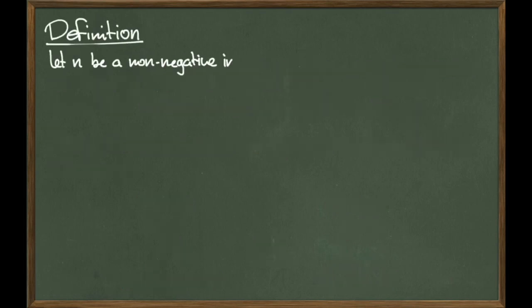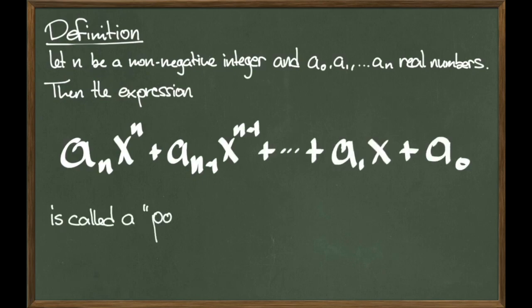Now we're ready to define a polynomial. Let n be a non-negative integer and let a0, a1, up to an be real numbers. Then the expression below is called a polynomial in one variable X. This definition is very general and looks a little bit weird, but all we have is different powers of X, each power of X being an integer, and each term is accompanied with a real number. We are going to see some examples after this slide, so it's still completely okay if this definition seems kind of strange.